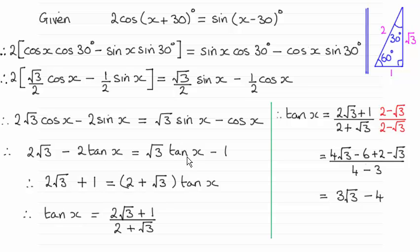Now, next, I just bring the tan x terms to the same side. I add the 2 tan x to both sides, and I also add 1 to both sides. So that gives me this equation. And then I can factorise by putting tan x out as a common factor, and then just divide by 2 plus root 3.